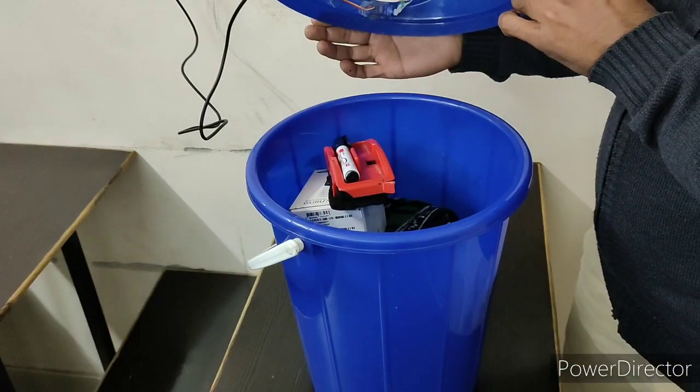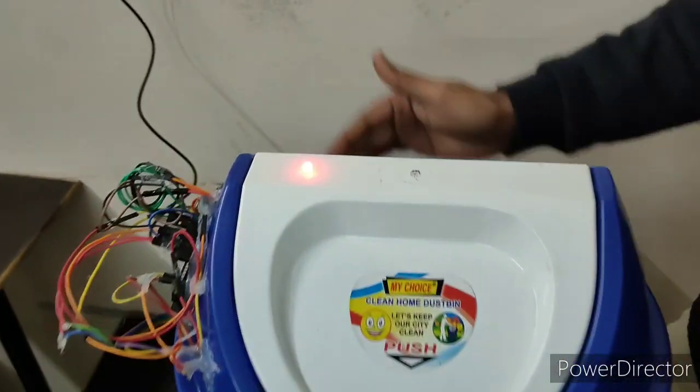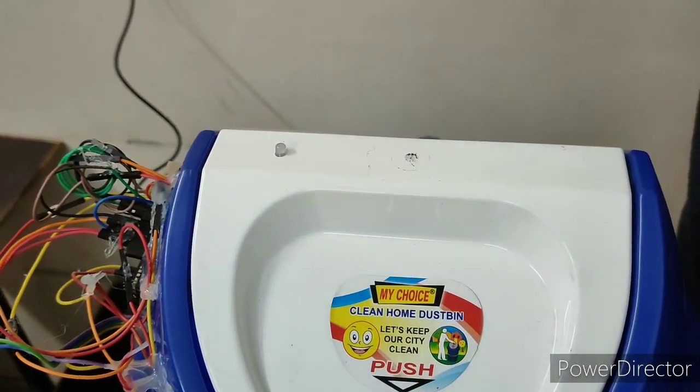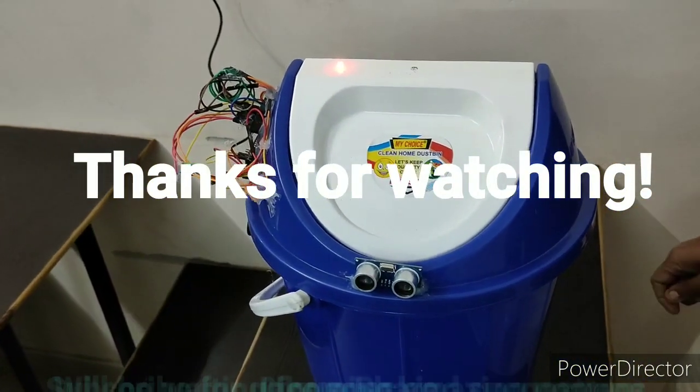I am putting some more items to show you that garbage level is full. And it is indicated by red light, you can see it here. Guys, this is our working operation, working model of our smart dustbin.